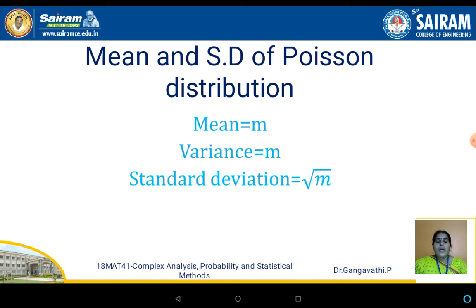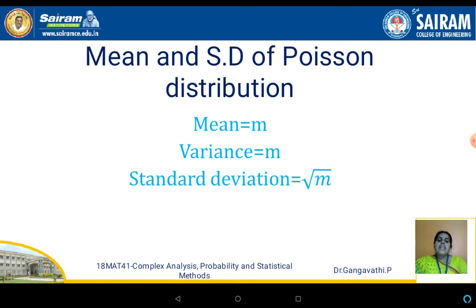As discussed for other distributions, we also need the mean and standard deviation of Poisson distribution. For a Poisson distribution, the mean is m — recall we set m = n·p in the first slide. The variance is also m, and the standard deviation is √m. Remember: for Poisson distribution, mean and variance are equal, both equal to m.